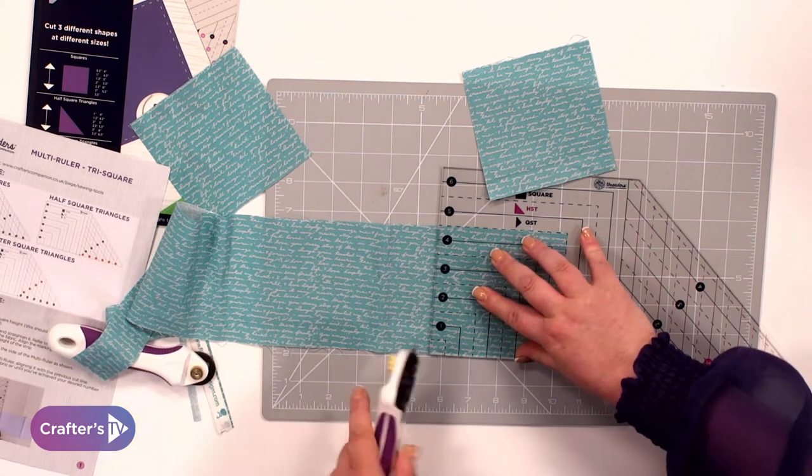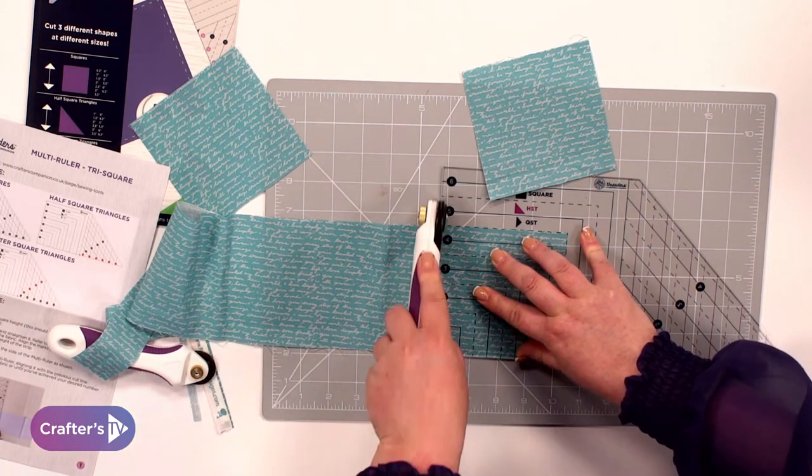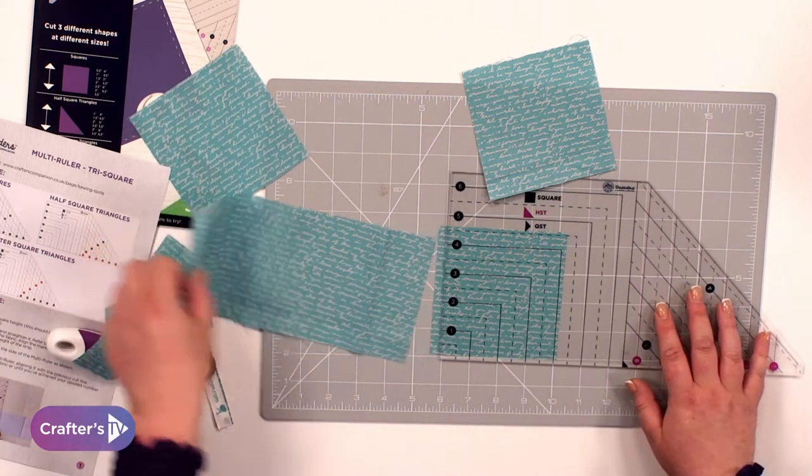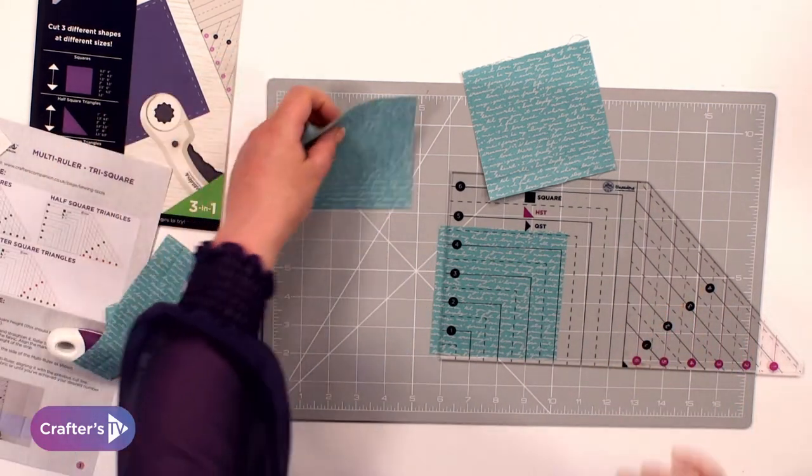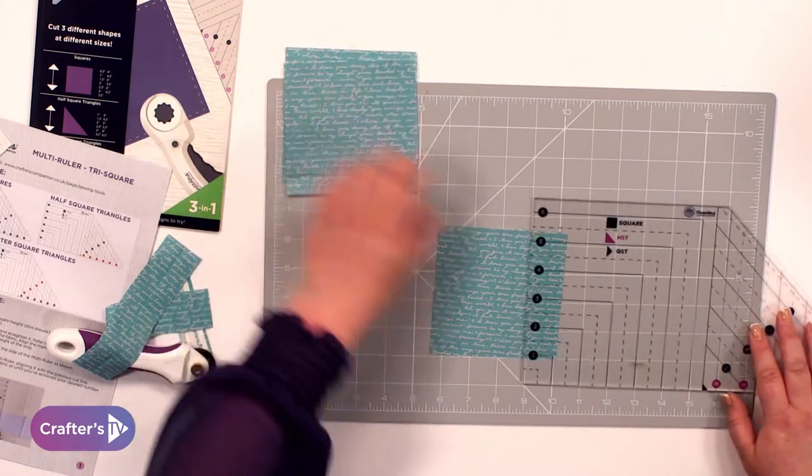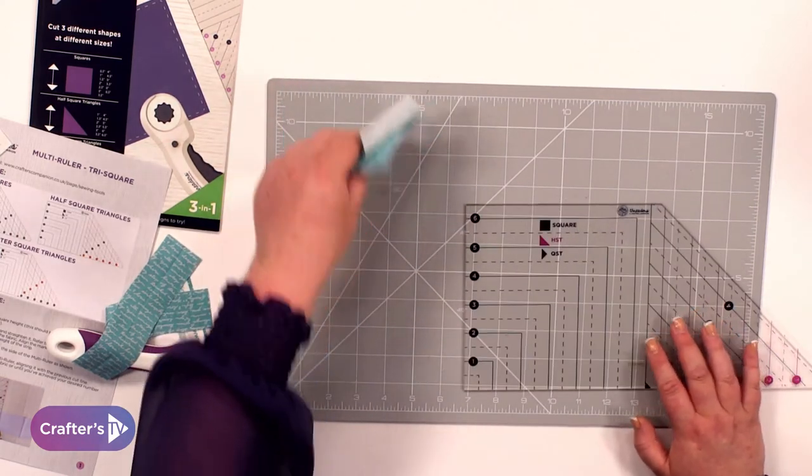As I say, you can cut multiple layers with this. I usually cut maybe four layers at a time for ease but if you are a beginner, start off with one layer and get your confidence built up. So they're the squares that you can cut.